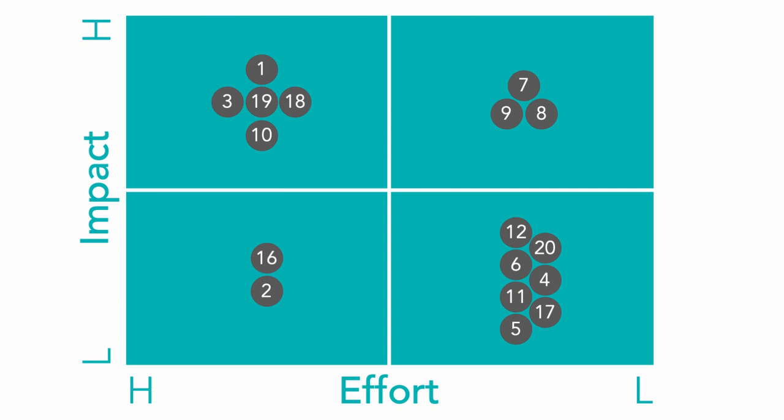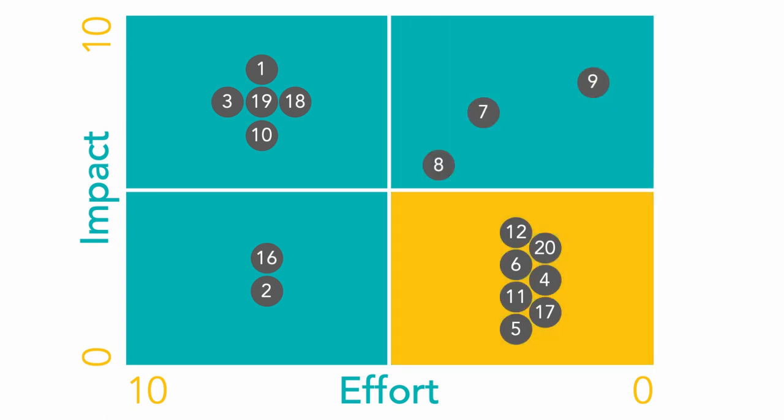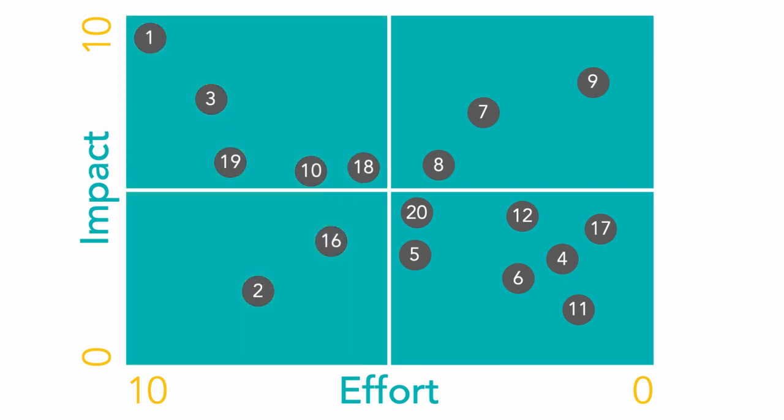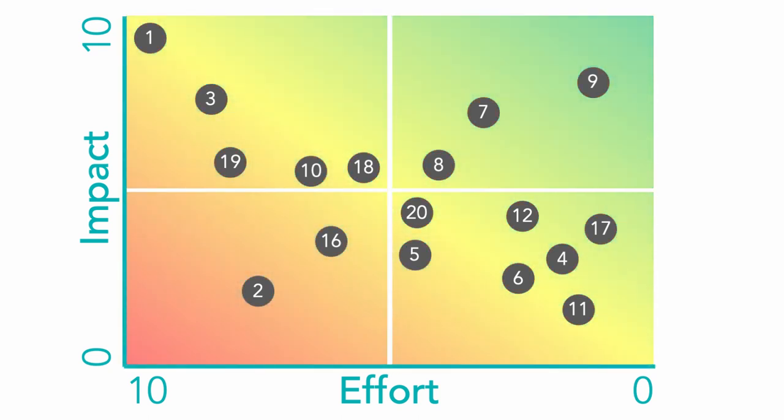In order to do this, it's helpful to replace low and high with a scale. We'll use zero to 10 instead, but you should obviously use whatever's most appropriate for you. Using our scale, we can now plot our initiatives within this matrix instead of just assigning to a quadrant. We want to do this as accurately as possible because we're going to make decisions based on the relative positions of these. We're emphasizing this by placing a heat map in the background, but this is only for you guys. You don't have to do this in real life.